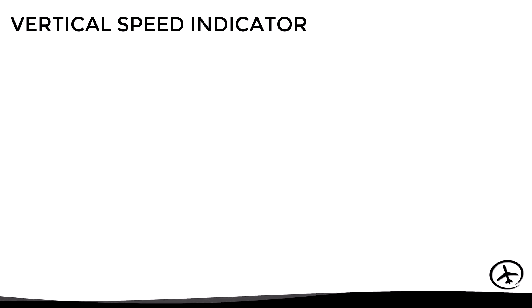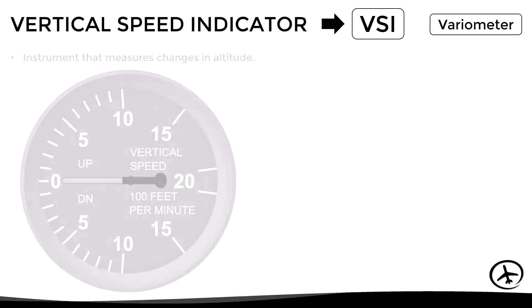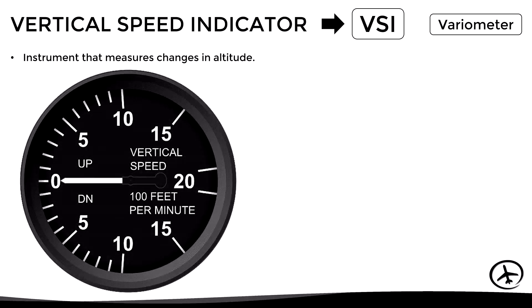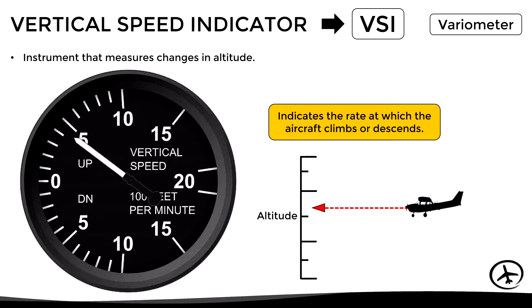The vertical speed indicator is abbreviated as VSI, and sometimes it is referred to as the variometer. This is an instrument that measures changes in altitude; in other words, it indicates the rate at which the aircraft climbs or descends.